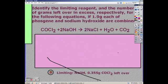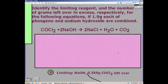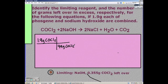So now I need to solve for excess. And remember excess, you always have to start with your limiting and convert to the excess reagent. So I start with my 1.9 grams of phosphine and I'm converting to grams of sodium hydroxide. I need to convert all the way to grams because my sodium hydroxide was given to me in grams.